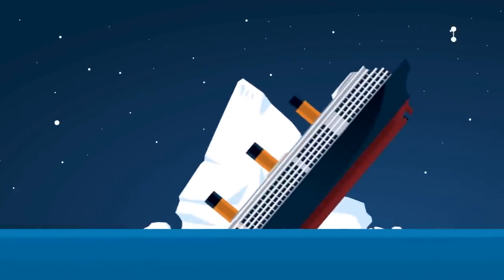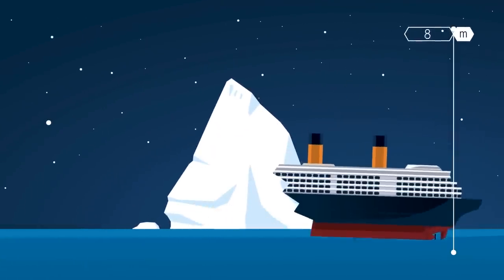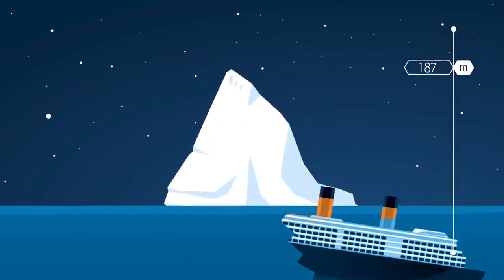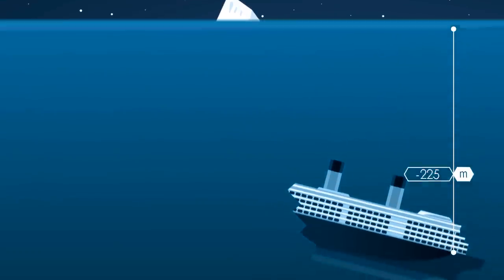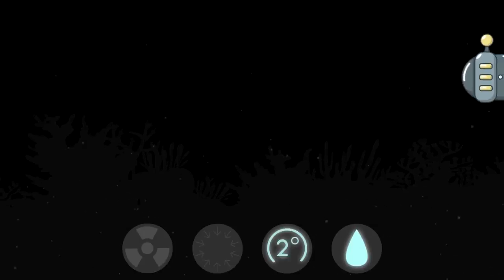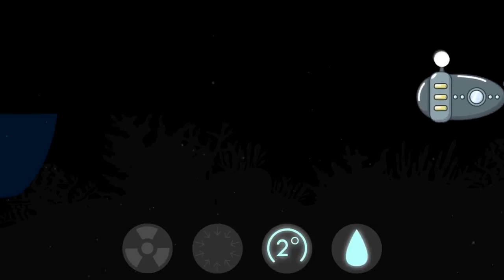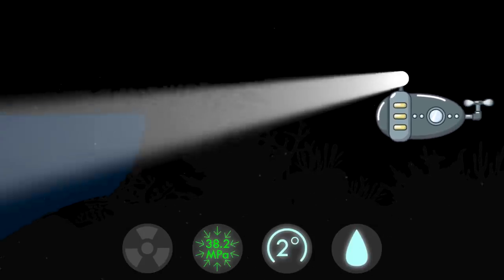On April 15, 1912, an unsinkable ship named the Titanic hit an iceberg and came to rest nearly 4 kilometers beneath the surface. Light? None. The temperature? 2 degrees Celsius. Pressures? 5,000 pounds per square inch.